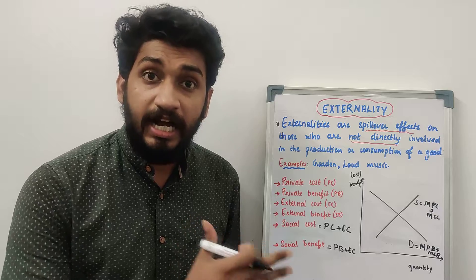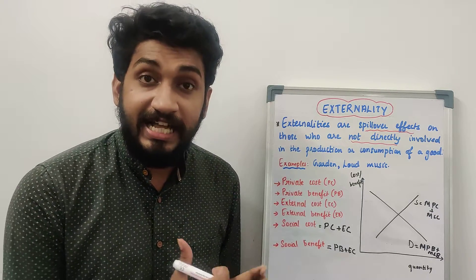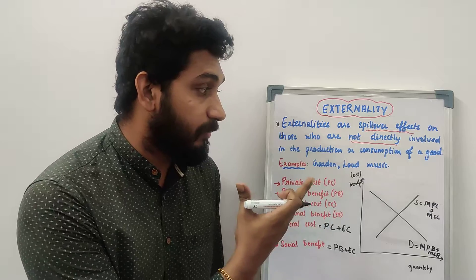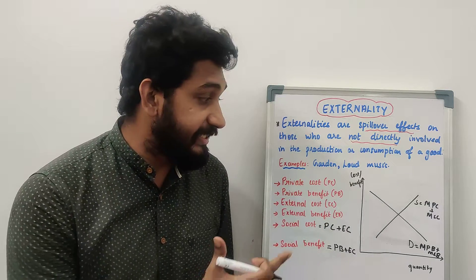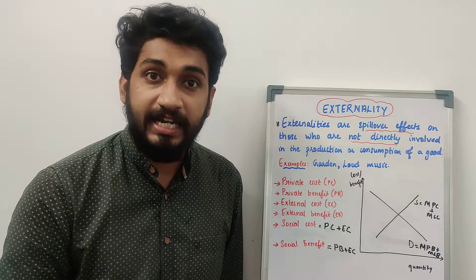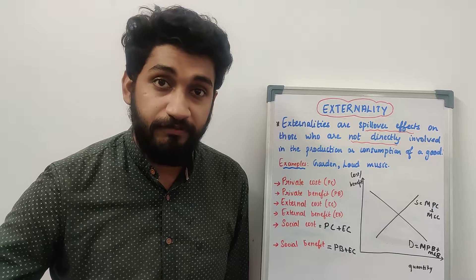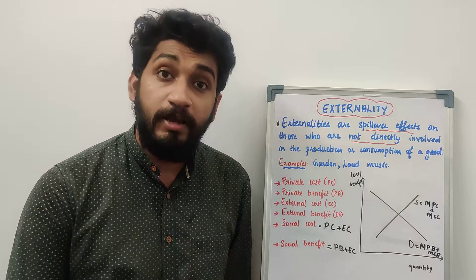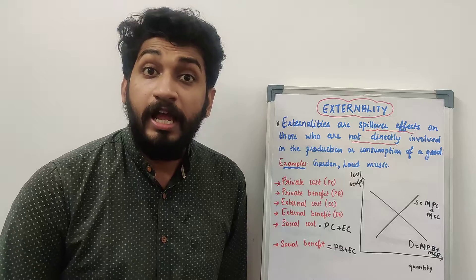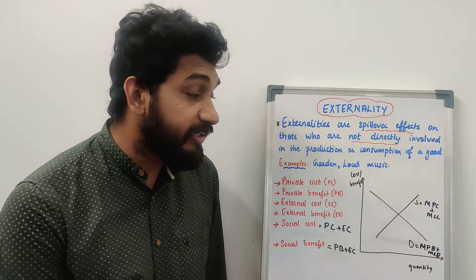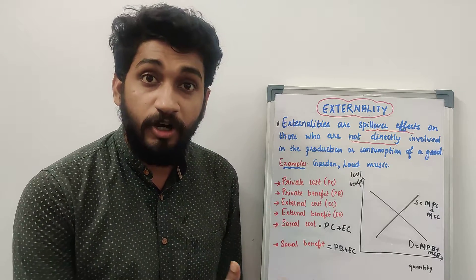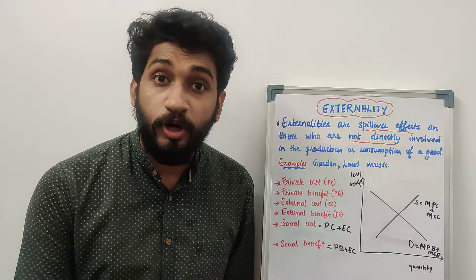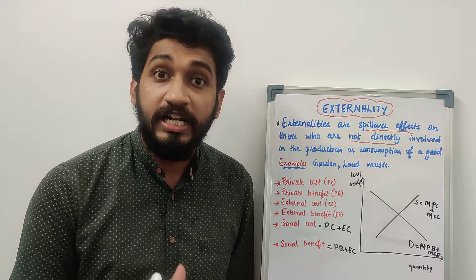Generally, the market fails to observe externalities and does not reflect the true cost or benefit because third parties are neither paying for the cost nor receiving the benefit. When externalities are included in the market, they are added to the private cost and private benefit curves — external cost is added to private cost, and external benefit is added to private benefit. This causes demand and supply curves to shift, resulting in market failure. For positive externality, social benefit is greater than private benefit; for negative externality, social cost is greater than private cost. This is how market failure happens — the true cost of production or consumption isn't reflected.